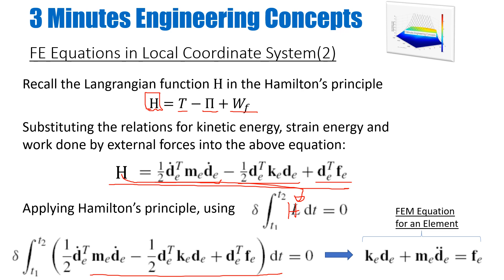Applying variational principles — if you are interested, you can go back to any basic FE book where they explain the variational calculus principles — you apply those principles, find a solution, and construct a linear equation. This is the FEM equation for an element, which could be a 1D, 2D, or 3D element. You can see this is: the stiffness matrix times the displacement (stiffness part), the inertia part (mass matrix), and the force or forces in the element.